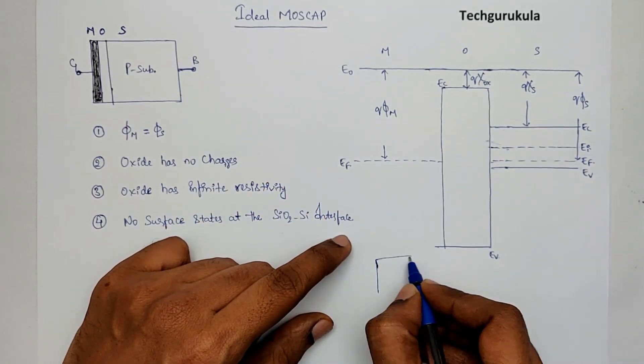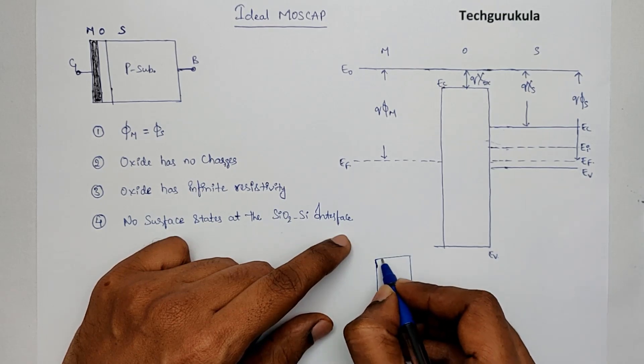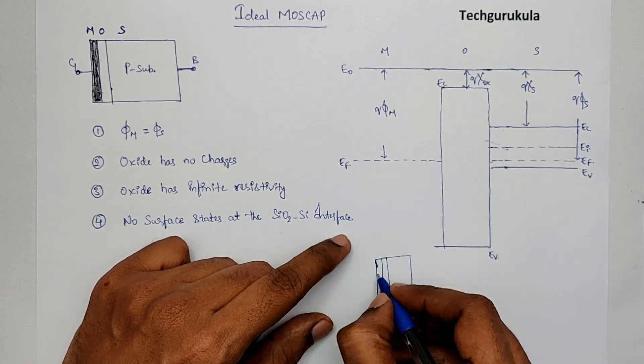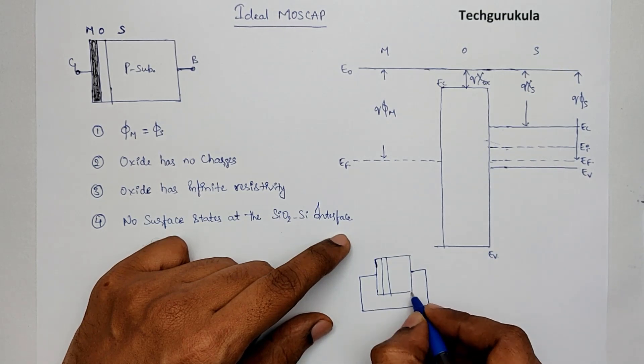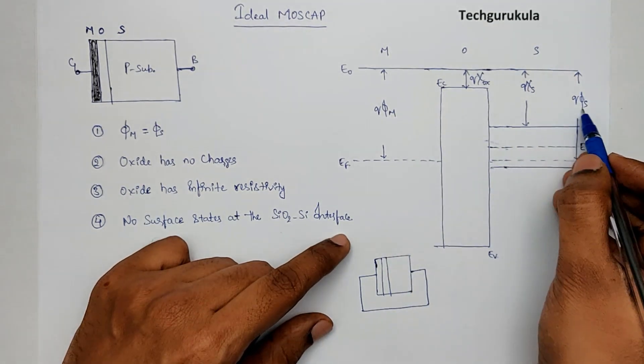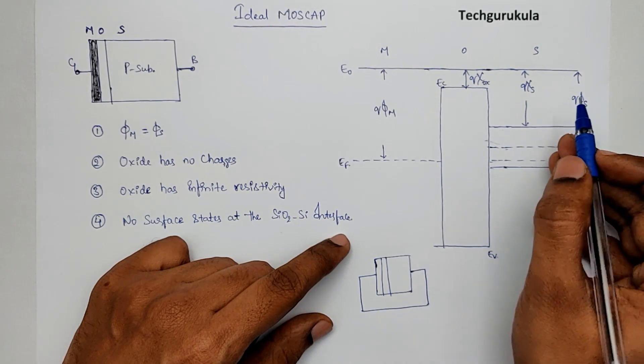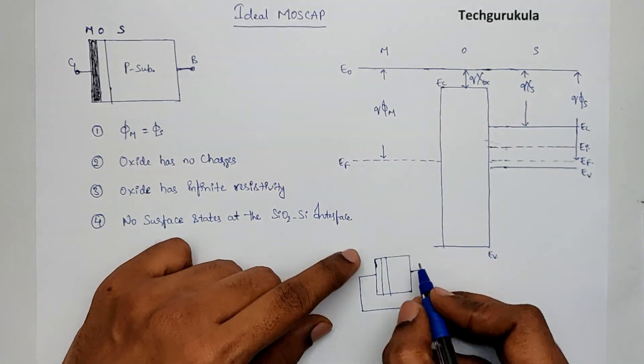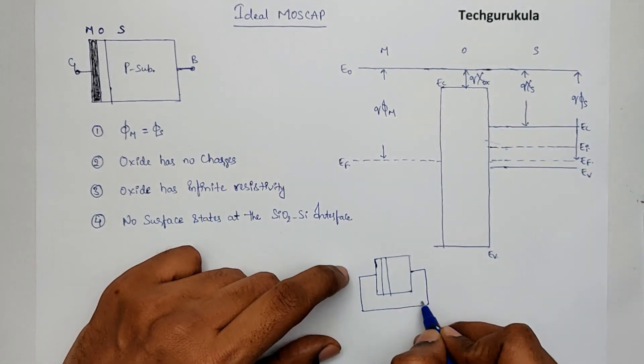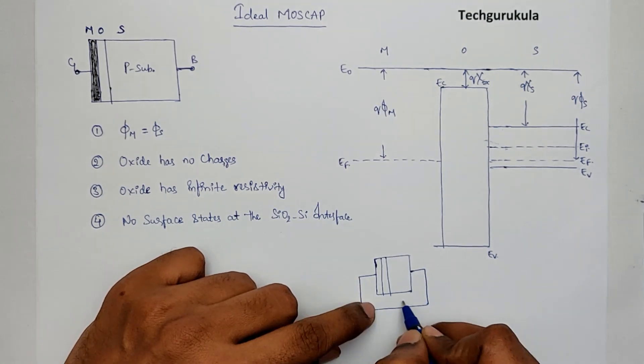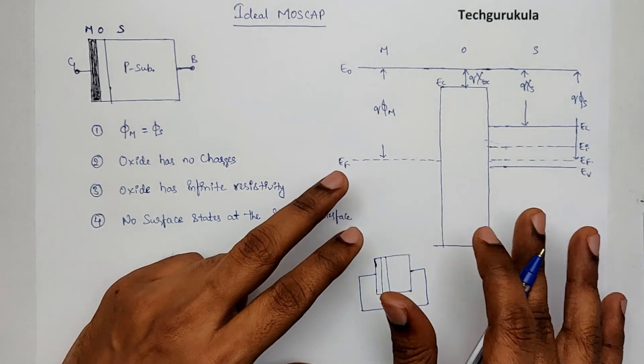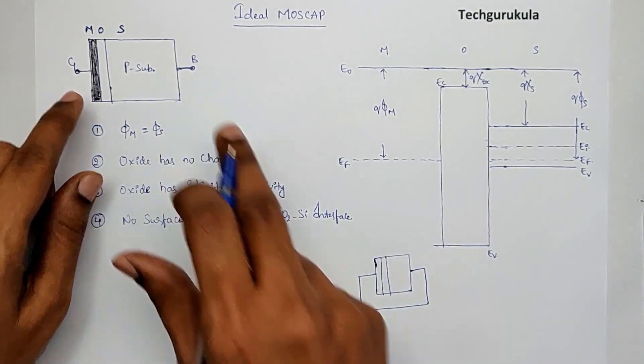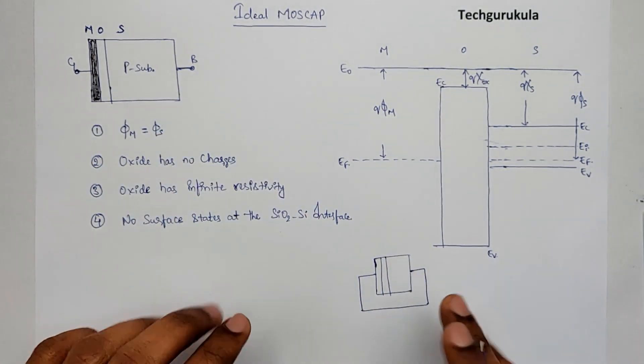Let's say, if you take the MOS cap, and if you short these two terminals, if there is a phi M and phi S difference, in fact, of course, here we are taking it equal. If there is a difference, then there has to be charge exchange when you short them to accommodate the difference. But, in this case, there won't be any transfer of charge. However, it is here, even if you short, it's going to be exactly same.